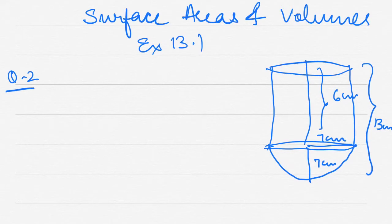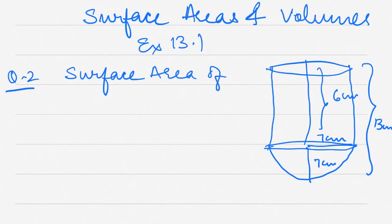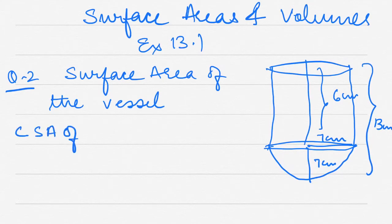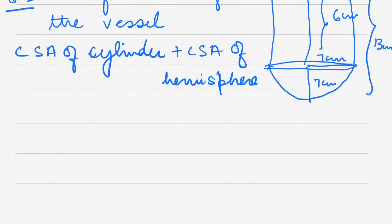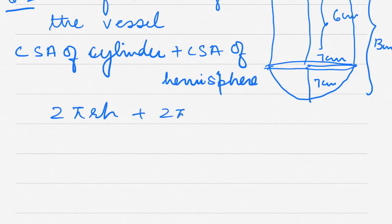Now all dimensions are clear. To find the surface area of the vessel, I need the curved surface area of the cylinder plus the curved surface area of the hemisphere. The formula for the curved surface area of the cylinder is 2πrh, and for the curved surface area of the hemisphere it is 2πr square.